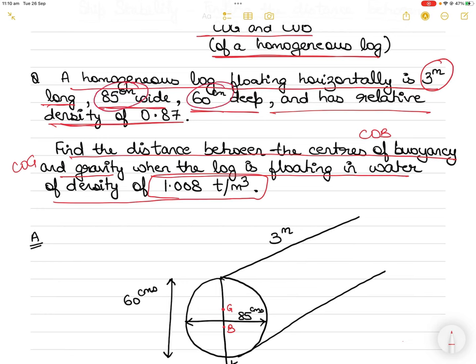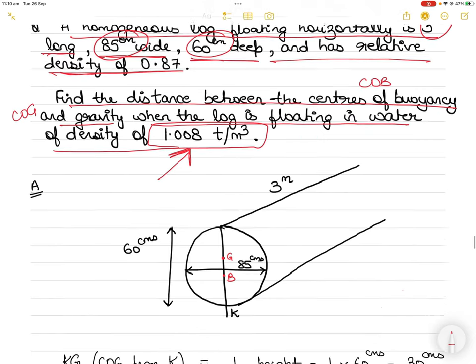The length is given in meters but the width and depth are in centimeters, so you have to convert all of them into one unit, ideally meters. The relative density 0.87 doesn't have any units because it is with respect to fresh water density. Relative density has no units because it is in reference to another density. You have to find the distance when the density of water is 1.008 ton per metric cube.